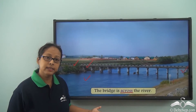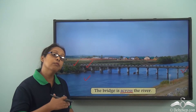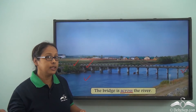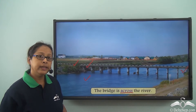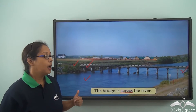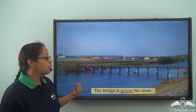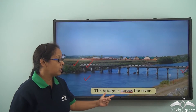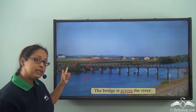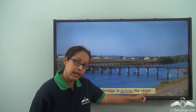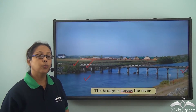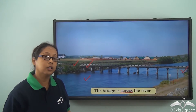In the previous sentences we noticed that movement was involved from one side to the other. But in this sentence — 'the bridge is across the river' — there is no movement. When we say 'across' here, we mean it is connecting one side to the other side. That is another way of using 'across'.